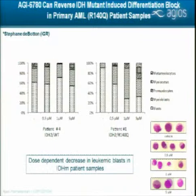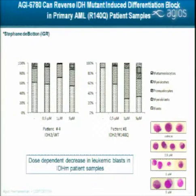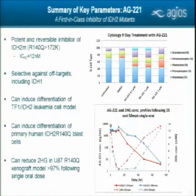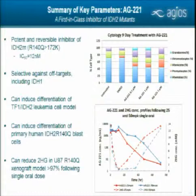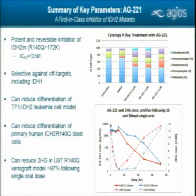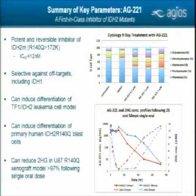A pathologist blinded to the samples counted blast cells, myeloblasts, all the way up to metamyelocytes, and confirmed a dose-dependent decrease in blasts in the mutant patient but not in wild-type patients. With this information, we moved to look at the effect of the compound in a primary human xenograft. The data I'm going to show is from AG221, our first-in-class molecule currently in clinical trials for IDH2 mutant tumors. AG221 is a potent and reversible inhibitor of the IDH2 mutation, with around 12 nanomolar potency, greater on R140Q than R172K, selective against off-targets, and able to induce differentiation in our TF1 system and in primary human blasts.